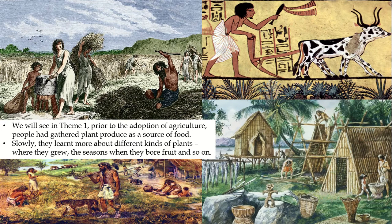Gradually the early man started to understand the different kinds of plants — where they grew, in which climatic conditions they grew, which area they grew in, what kind of soil they grew in. He may not have known all the technical terms, but he was observing when a particular plant would bear fruit and so on.